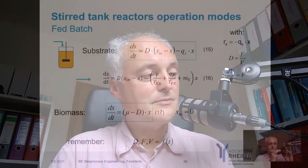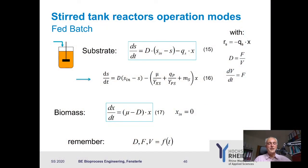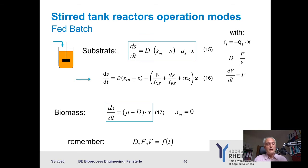Of course, if you know your trajectory of your feed rate you can also solve these equations fully. But this is just the general approach since there are different ways to do the feeding. Let's look at how this looks in summary. D, F, and V are functions of time — something you should remember — which is not the case for a closed batch operation.